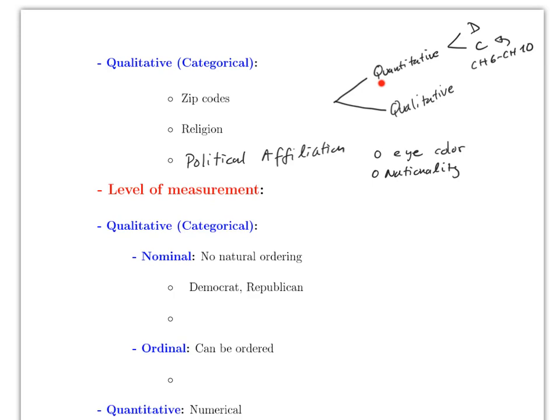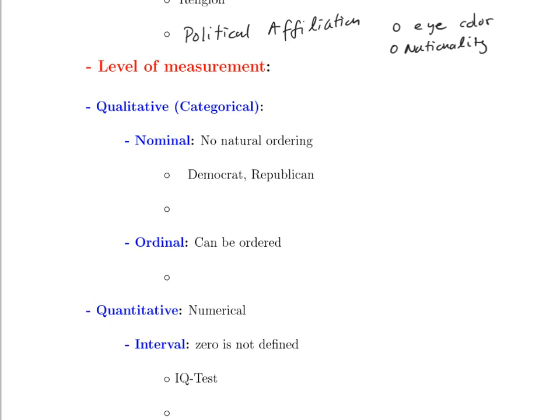This quantitative/qualitative and discrete/continuous approach is what we'll use the whole semester. In the social sciences, there is another way to define these variables called the level of measurement. You'll still have qualitative and quantitative categories, but the definitions are slightly different. Let's start with qualitative, which is the categorical — remember, this is not a quantity.